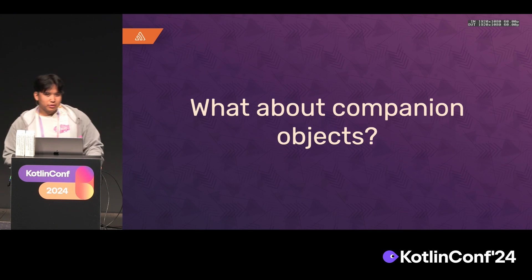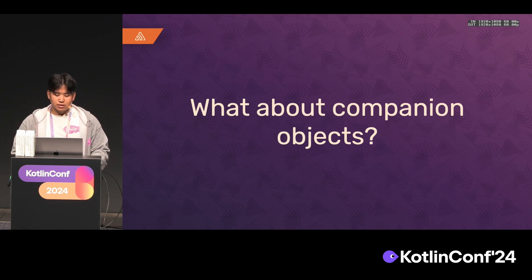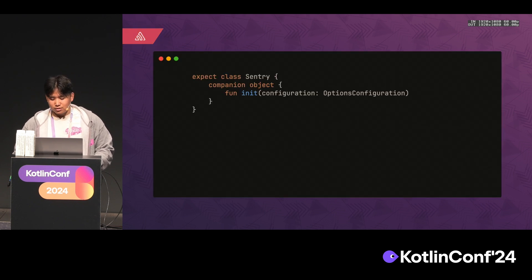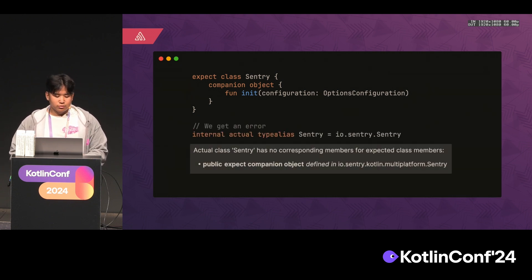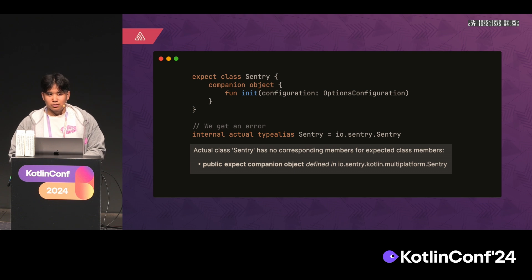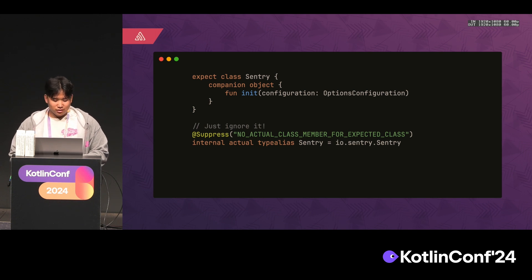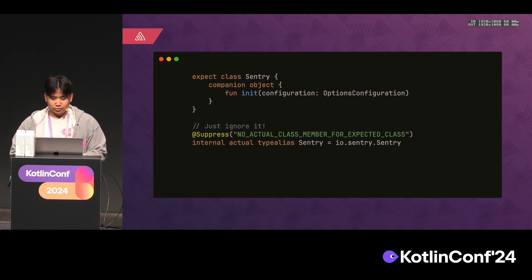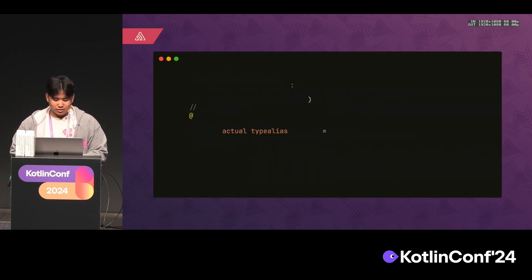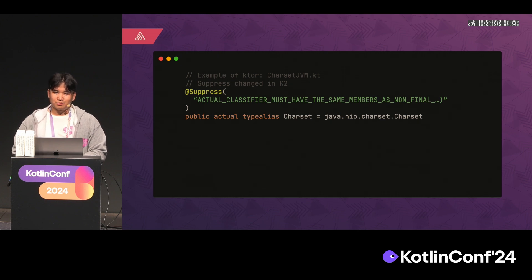I'm mentioning companion objects here because using type alias is not always straightforward and may need workarounds. If we expect a class with a companion object and a function in it, and we try to type alias this, it says it cannot find the companion object — which makes sense because there is no companion object in Java to type alias to. What we do here is just suppress that warning and use it anyway. We just have to be careful in testing, as it can crash at runtime if you ignore things carelessly. To show I'm not the only one doing this, here's an example from Ktor — they're also suppressing stuff, as are a bunch of other Kotlin repos in serialization and datetime.